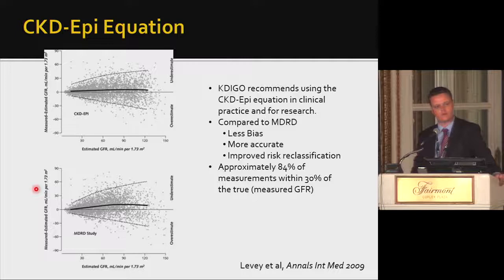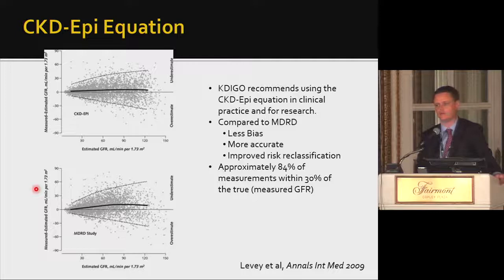About 84% of CKD-EPI measurements are within 30% of true GFR, which still means about one in seven measurements will be outside that range. Although CKD-EPI is the recommended test, most institutions, including the Brigham, still use the MDRD equation. Cystatin-C-based equations are better at risk stratification in individuals at the borderline of CKD stage 3, but these are not generally used in clinical practice.